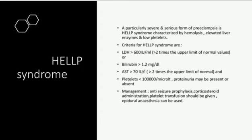Biochemical criteria for HELLP syndrome: LDH more than 600 international units per ml — more than 2 times the upper limit of normal — or bilirubin more than 1.2 mg per deciliter. AST more than 70 international units per liter — 2 times the upper limit of normal — and platelets less than 1 lakh per microliter. Proteinuria may be present or absent.